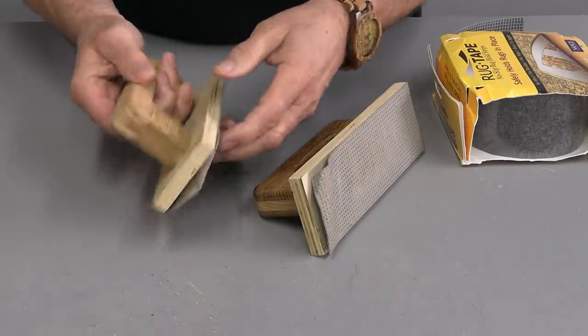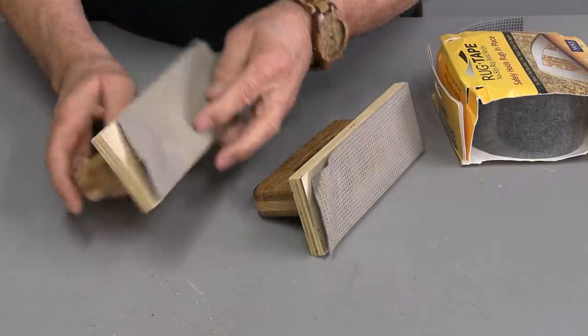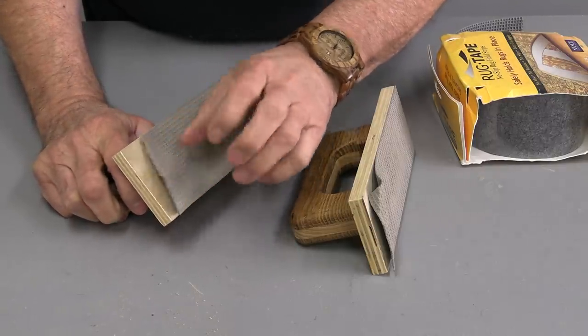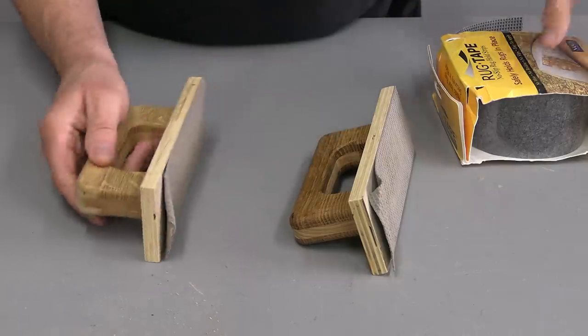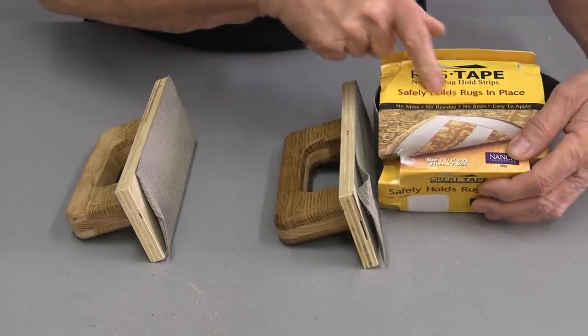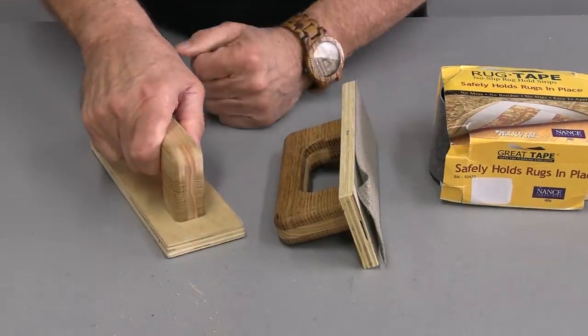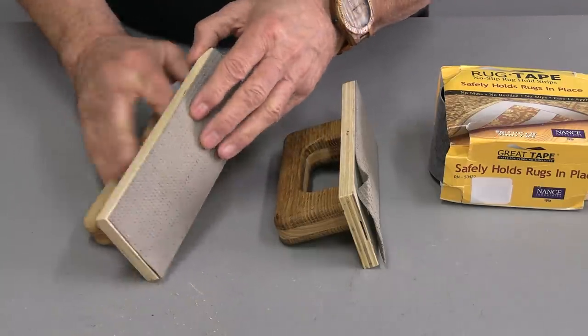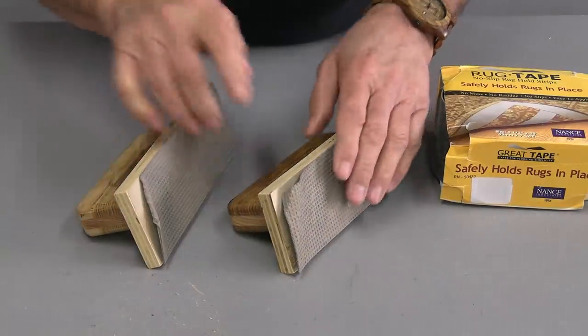Well now it's repair time or modification time however you want to look at it. Look, a few weeks ago or a couple of months ago I showed you how to make these push blocks. I love these push blocks. They use something called great tape, it's a rug tape, an anti-skid rug tape on the bottom and it works great because it gives you something to grip onto. What I had before wasn't working and this stuff actually works really well.